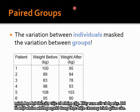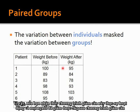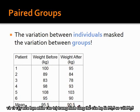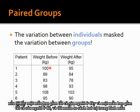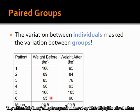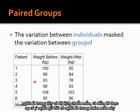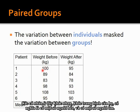Let's illustrate the advantage of paired groups. Consider a weight loss program with six people. Their weight before and after shows everyone lost 5 kilograms. Population means are 95.5 before versus 90.5 after. However, notice that within each group there is variation among individuals — meaning within this sample group, individuals differ from each other; there are some heavier and some lighter people.